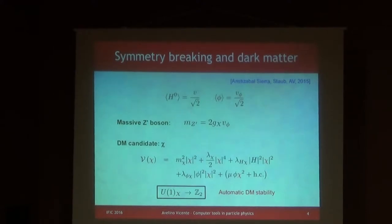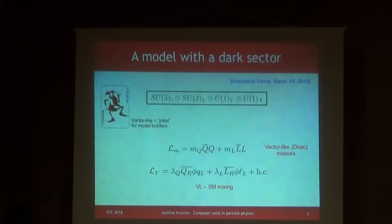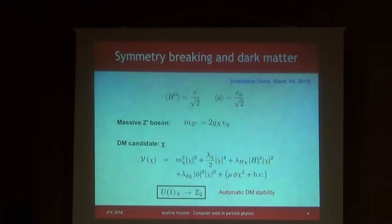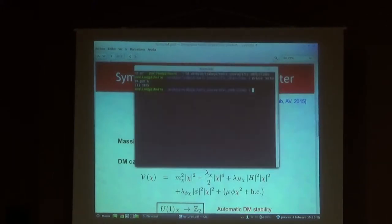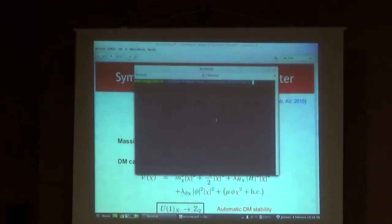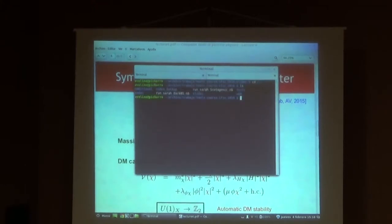Question about the components of phi and chi: phi only appears in the Yukawa couplings. By assumption, chi does not get a VEV, so the Z2 is not broken. Now, as I said, you can download the model files for SARAH from the website. What I'm going to do is review these model files, commenting on the most important details, in particular the main differences with respect to the scotogenic model.